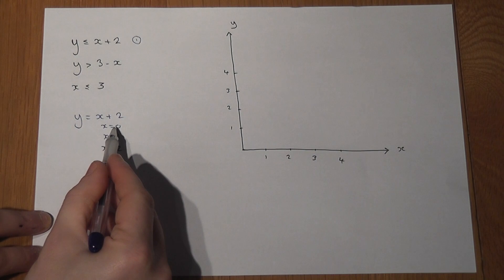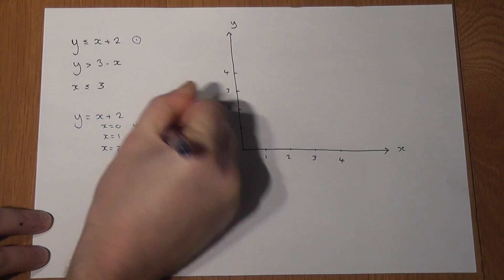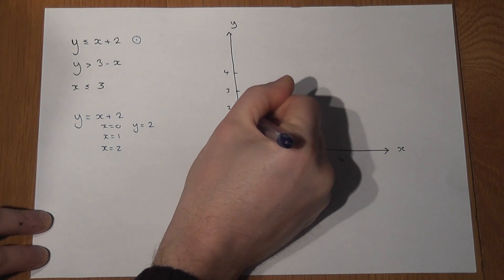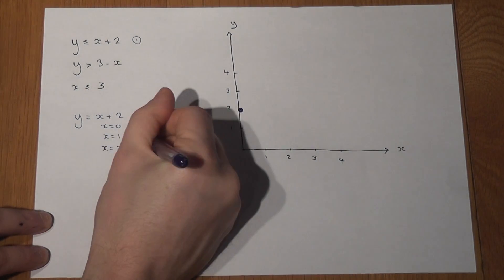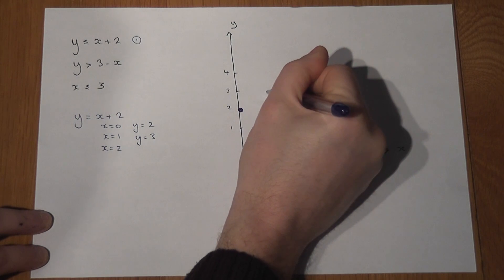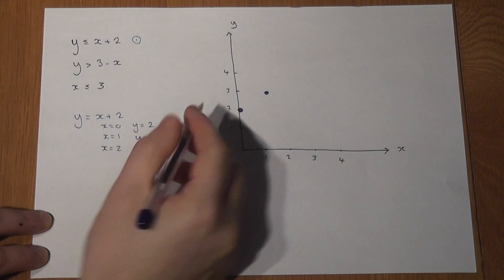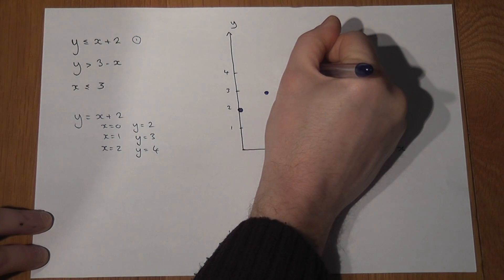So suppose x is 0. 0 plus 2 equals 2, so when x is 0, y is 2. If x is 1, 1 plus 2 is 3, so if x is 1, y is 3. And lastly if x is 2, 2 plus 2 is 4. If x is 2, y is 4.